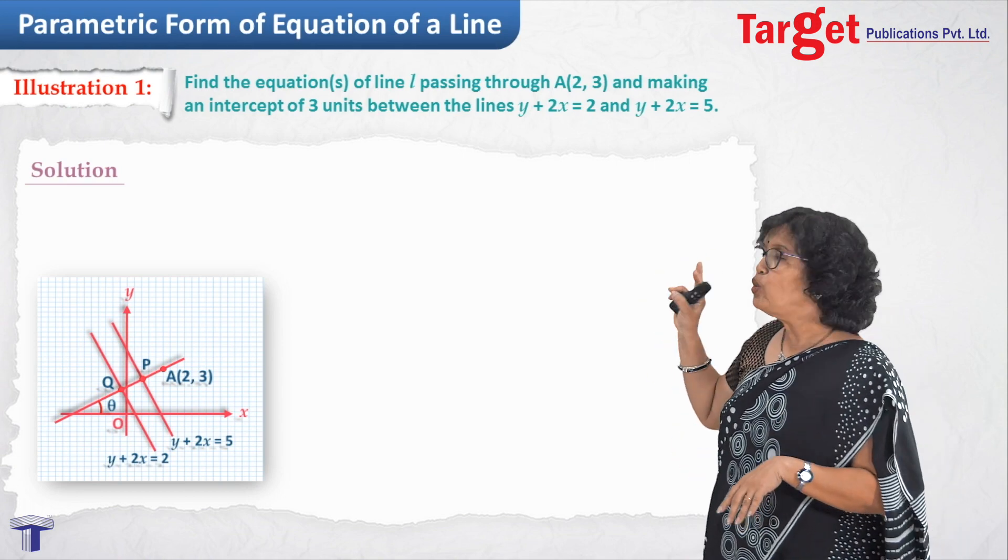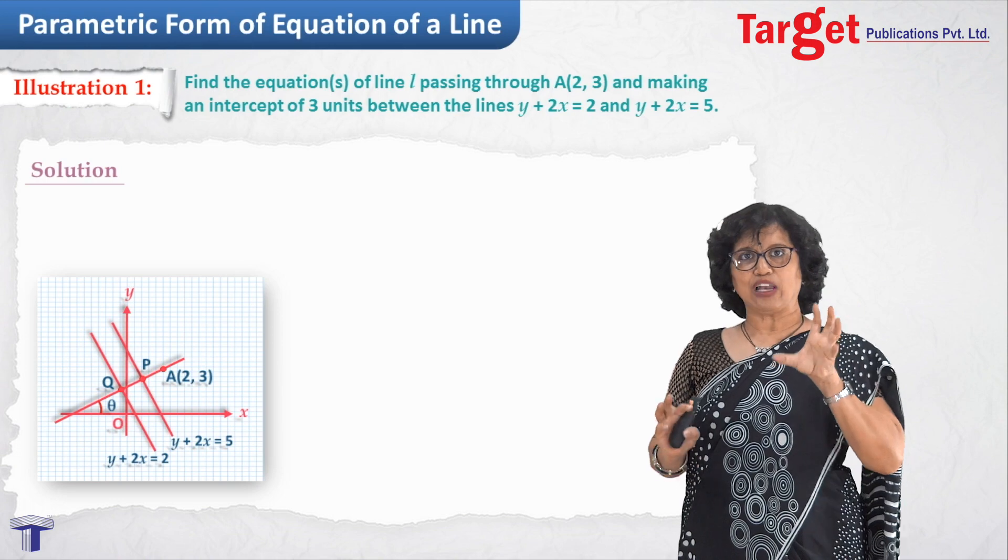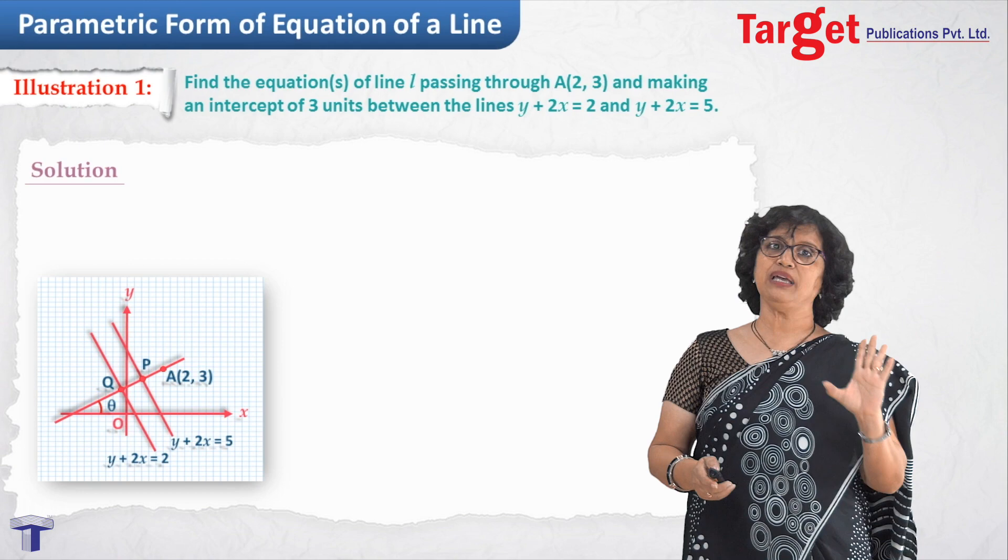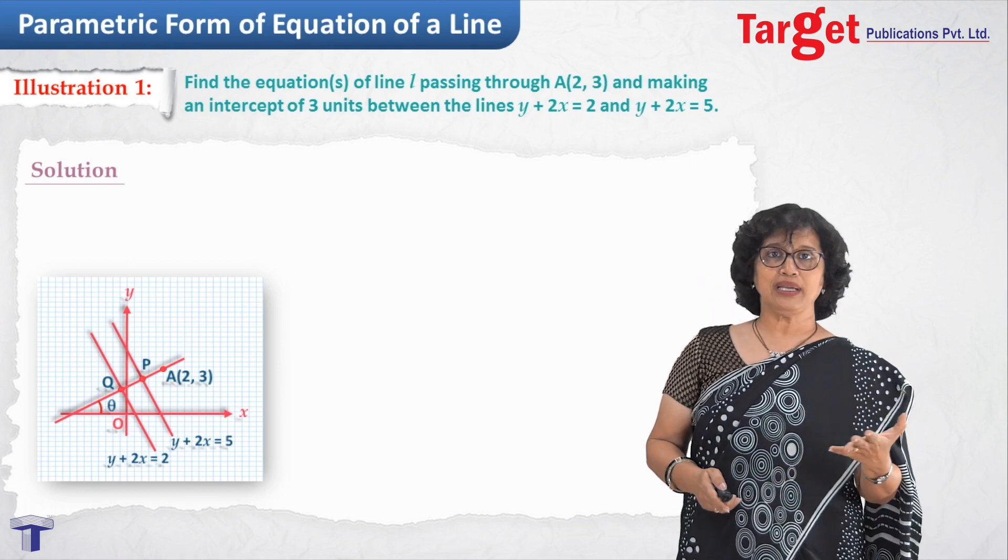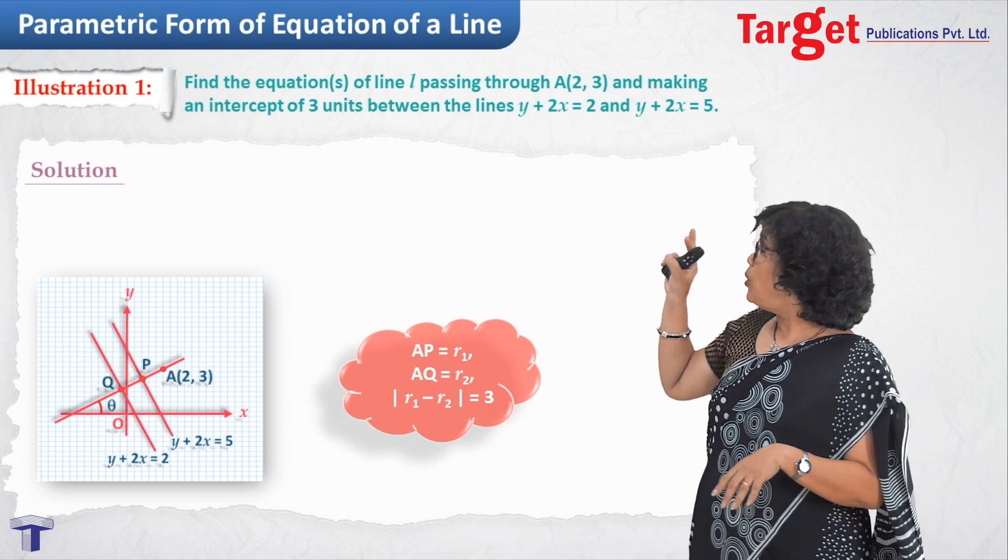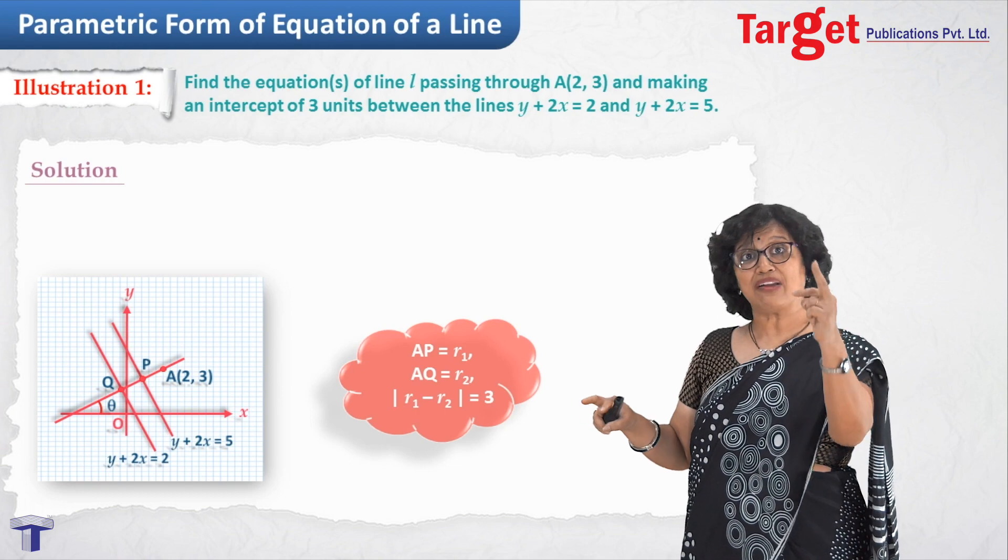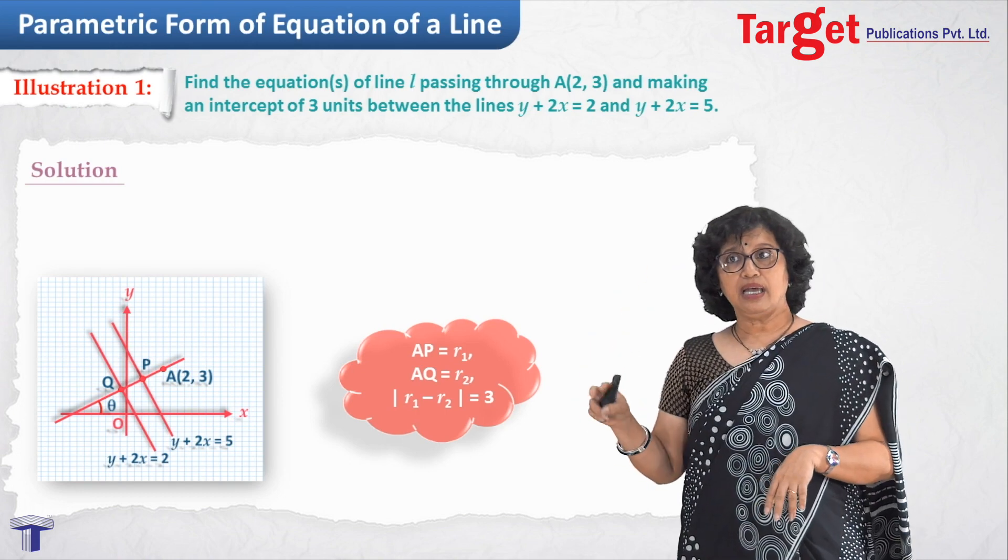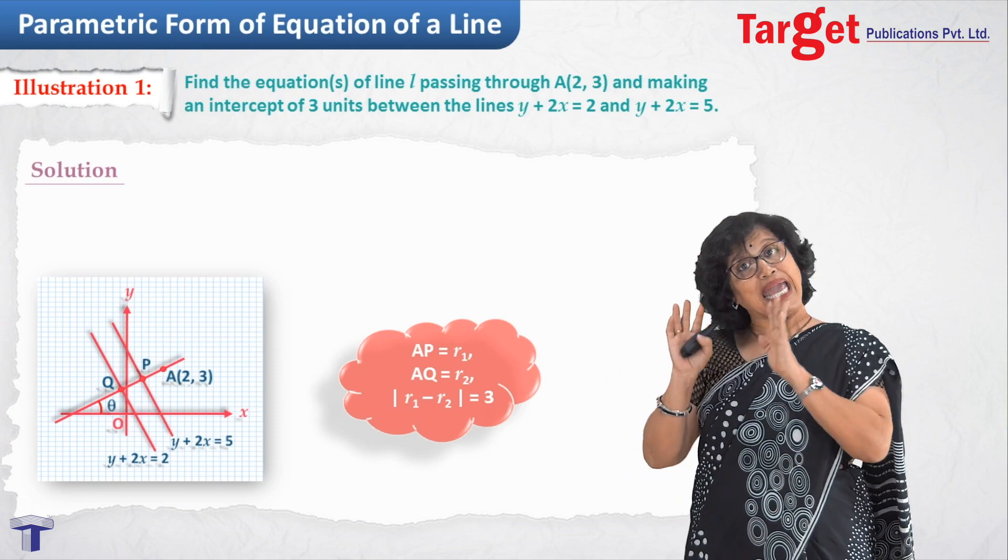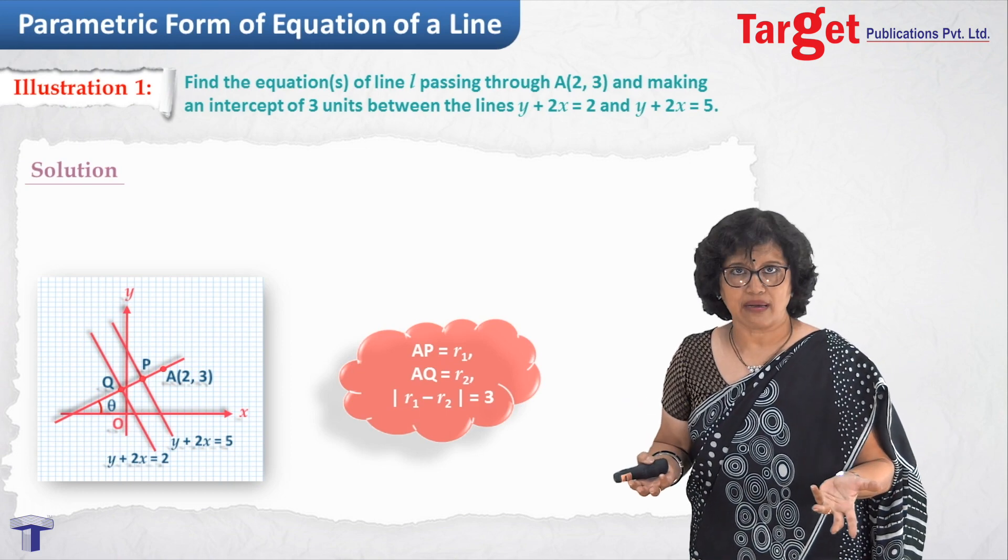Now understand one thing. If I know theta, then everything is done. So my entire calculation further would be on theta. Once I know theta, point is known to me, I may be in position to understand how to write equation of the line. Now where does that r come from? Now instead of r, here we will be writing two things, r1 and r2. AI I am taking as r1 and AQ I am taking as r2. Understand one thing. A is (2, 3). We do not know anything about P and Q. What those P and Q are.